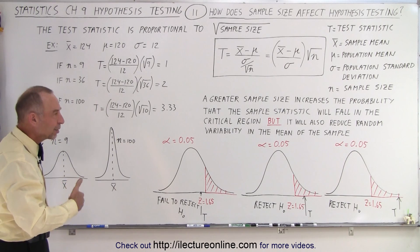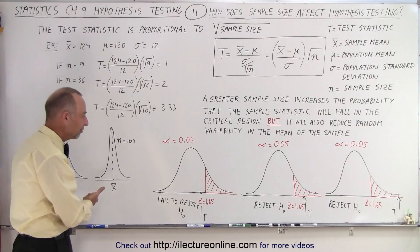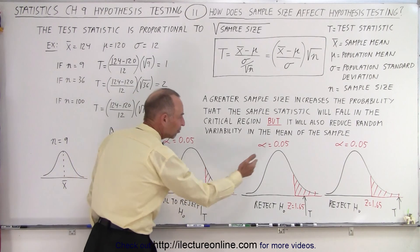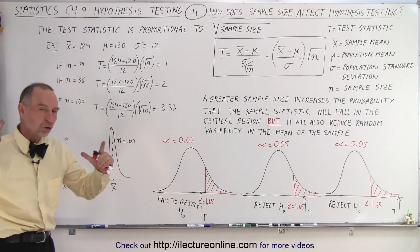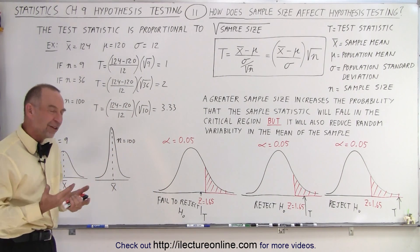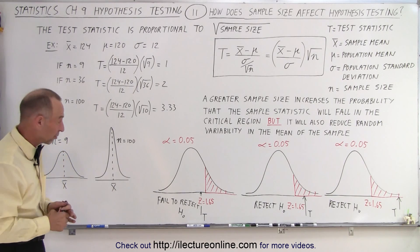So in other words, you get a greater certainty that if the test statistic does fall in the critical region and you use a large sample size, you feel that you're more likely to make the right decision.